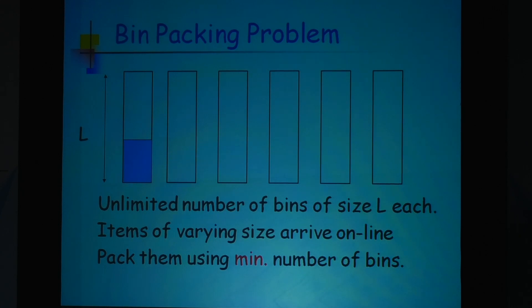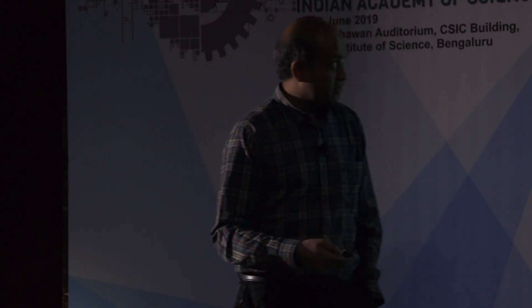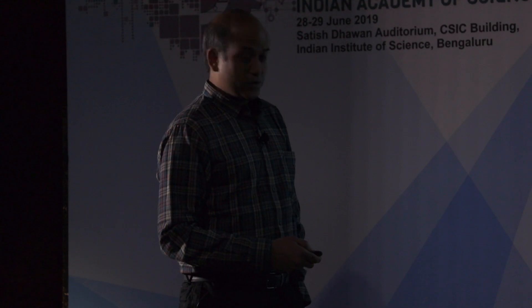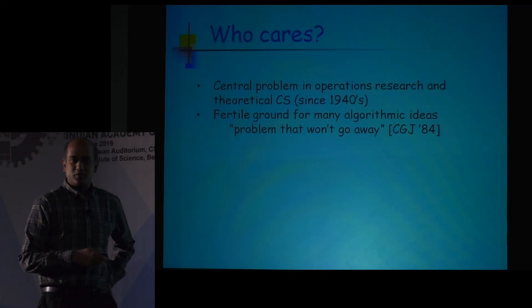The first object arrives, you place it in a bin; the second object you place here; the third object here, and so on. But the idea is that you do not have the complete picture of the set of objects you will see — you keep packing them as more things arrive. This is a central problem in theoretical computer science, studied since the 1940s, simply because it has a huge number of applications.